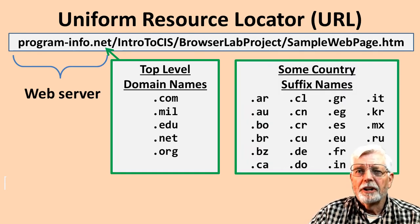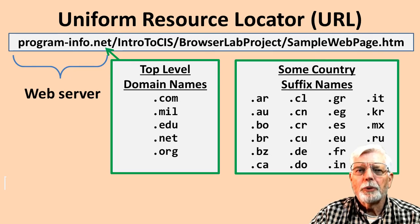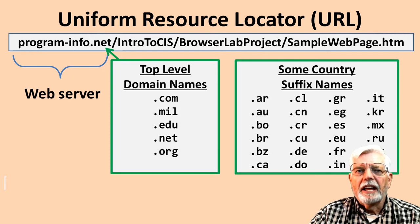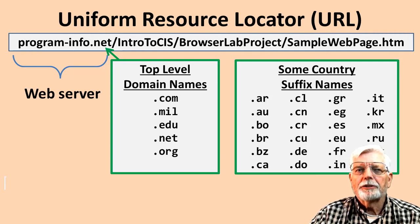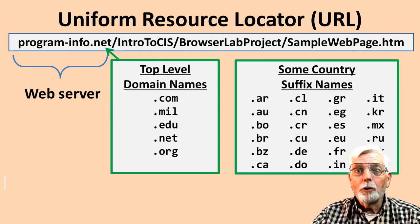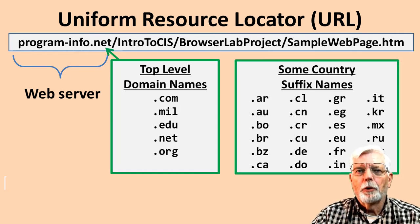A two-digit suffix can be added to the end of the domain name to identify the country. .us is for the United States of America, .ca is for Canada, .mx for Mexico, .au for Australia, and the list goes on to cover the many countries in the world.